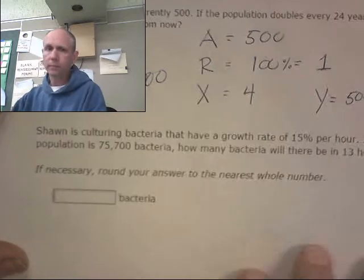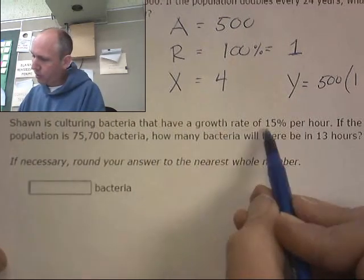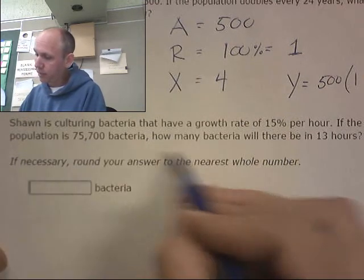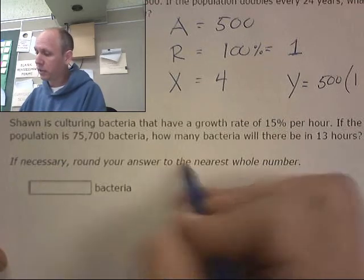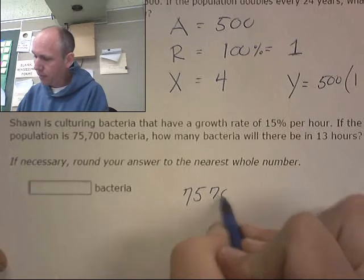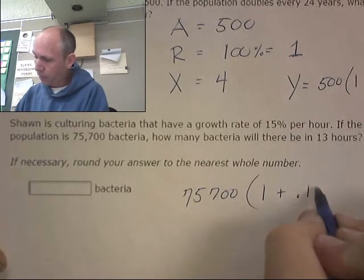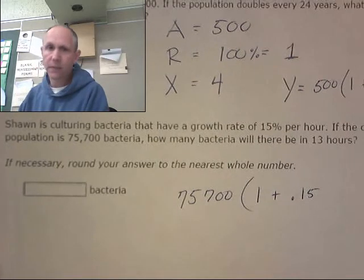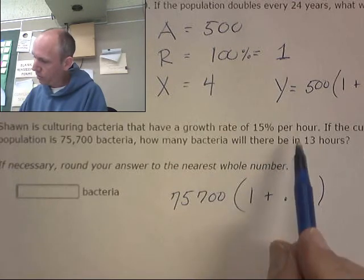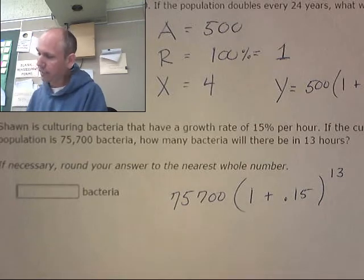And one final one. Sean is culturing bacteria that have a growth rate of 15% per hour. If the current population is 75,700 bacteria, how many bacteria will it be in 13 hours? So we're starting with 75,700. My growth is 1 plus .15. That's 15% written in decimal. And it's going to grow every hour for 13 hours. That means it's going to grow 13 times. That's the interval.